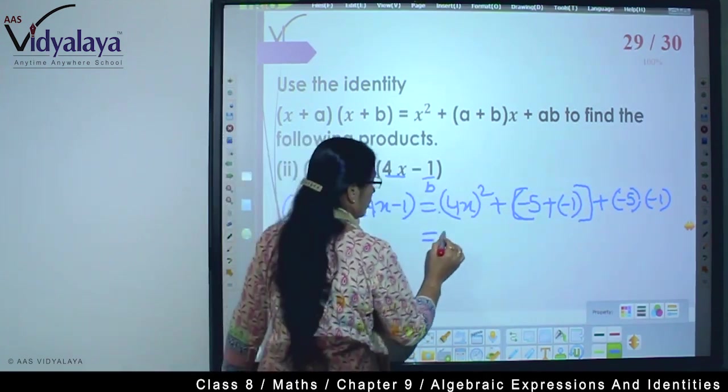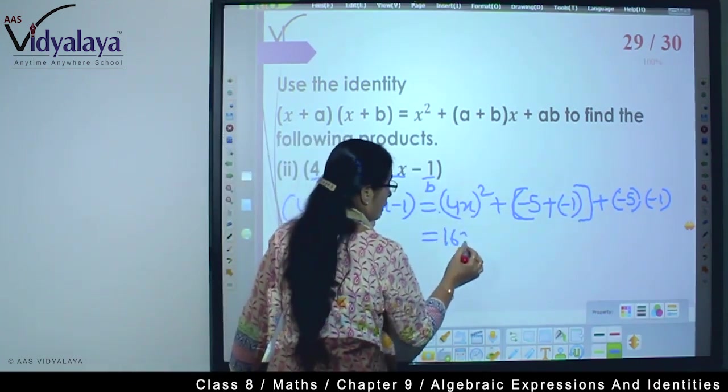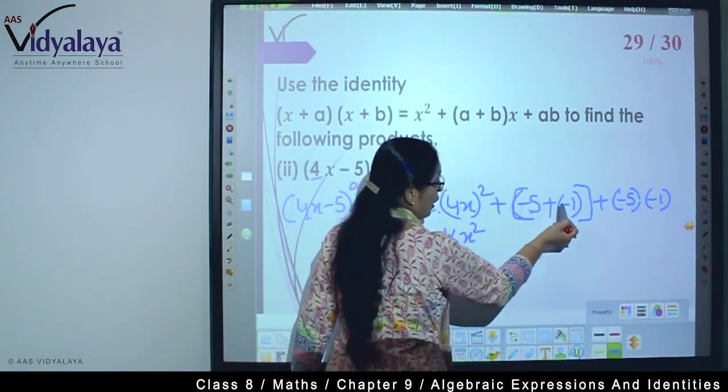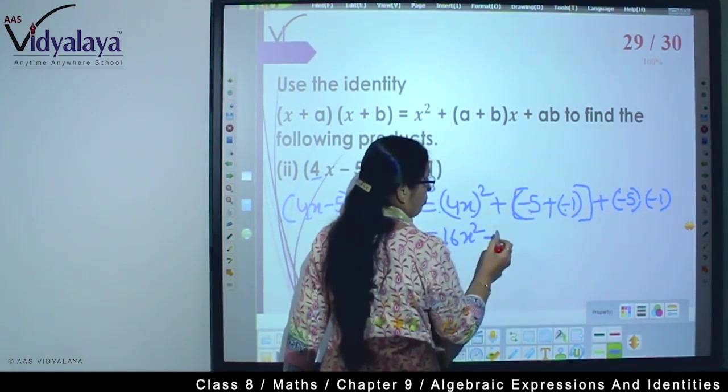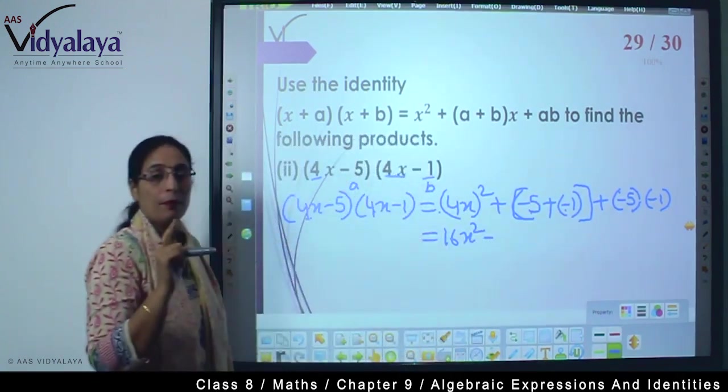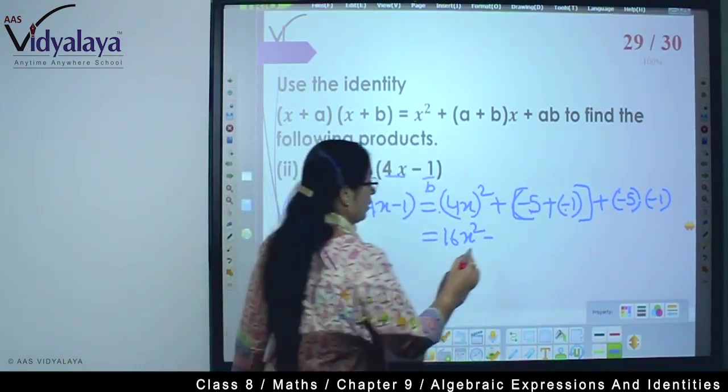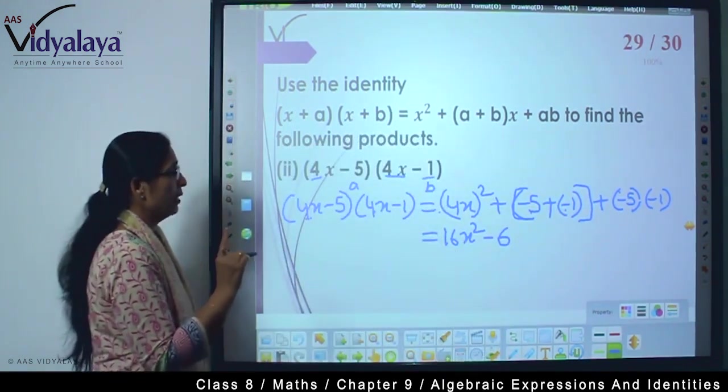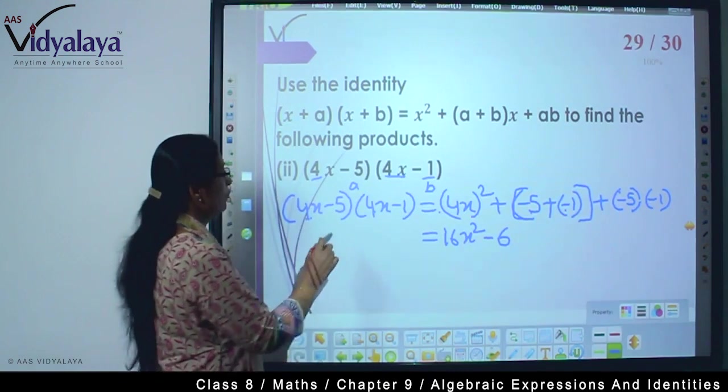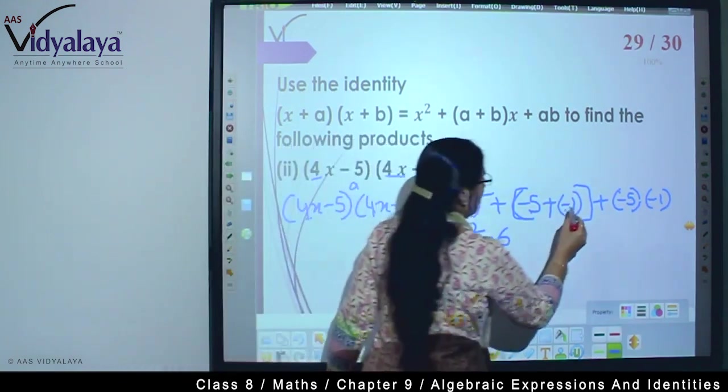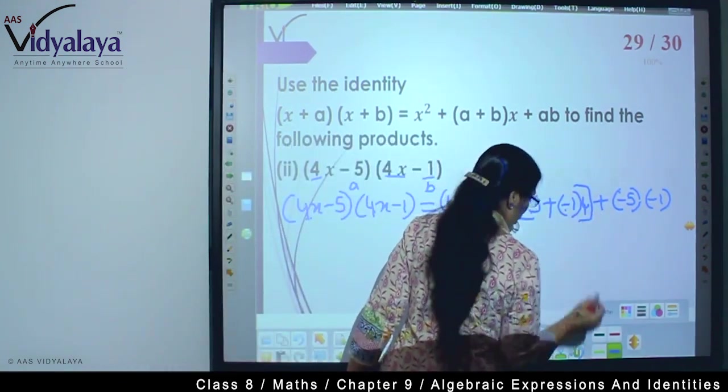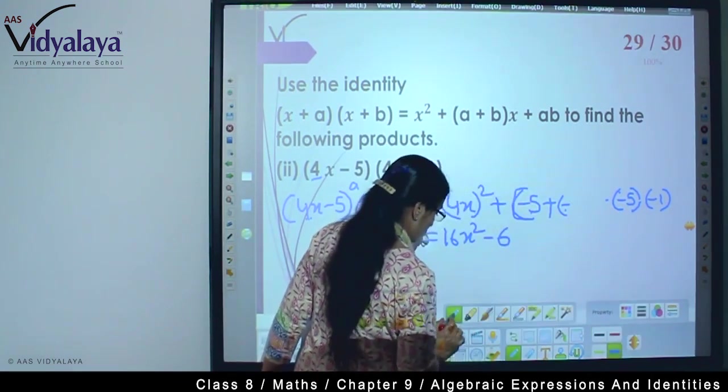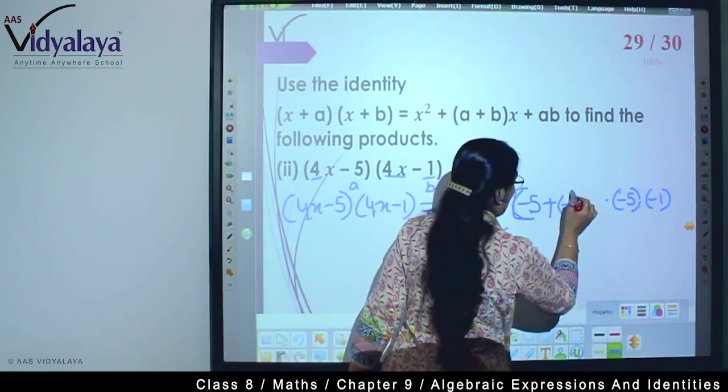So plus what comes? -5 and -1 multiplied by -1. So 4² is 16, very good. And x becomes x². Now when we open this bracket it becomes -5 and -1, so -5 - 1 is -6. Okay?